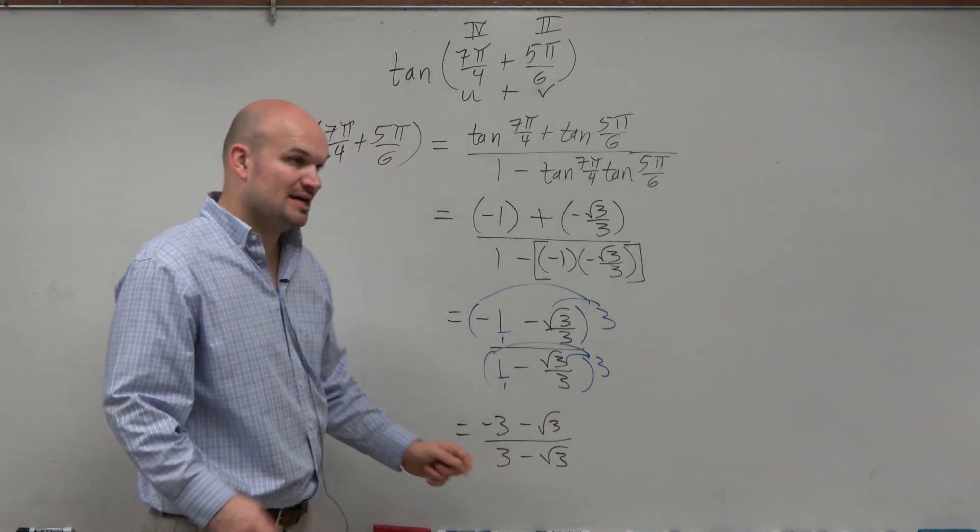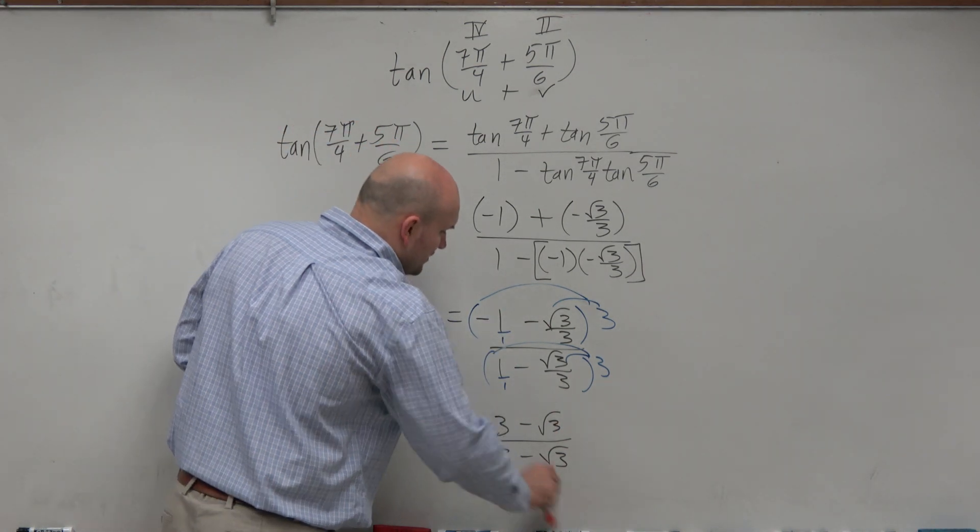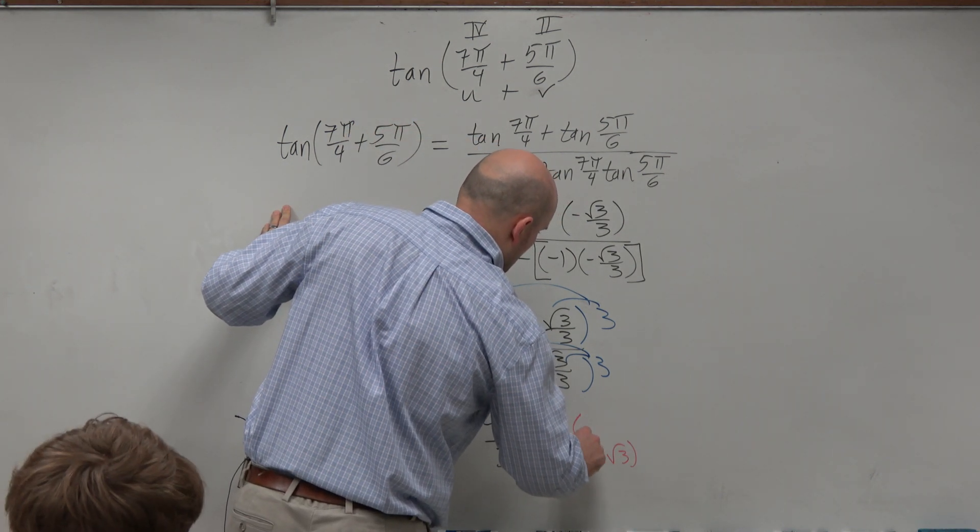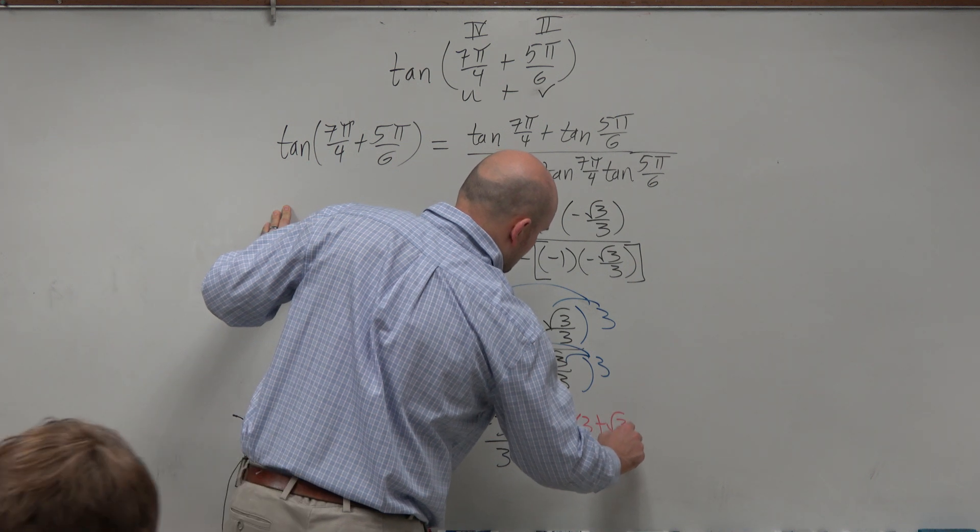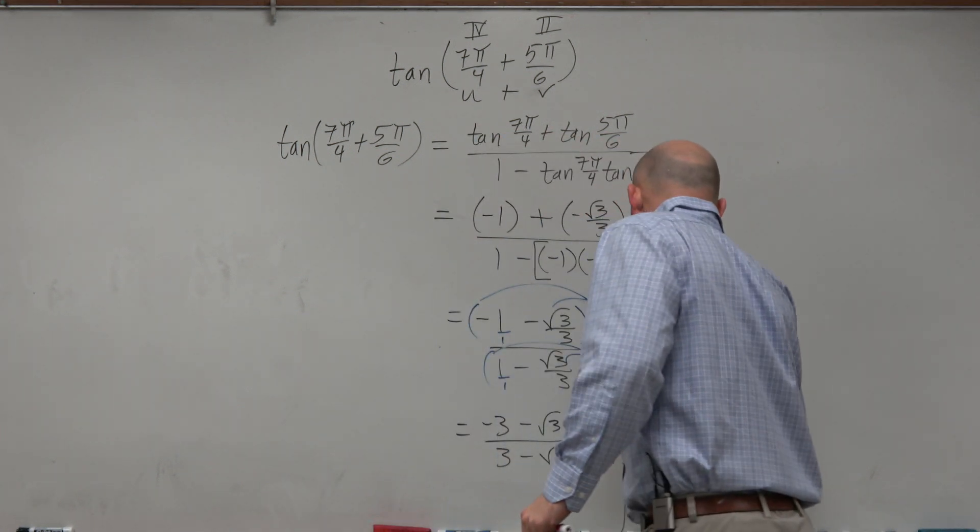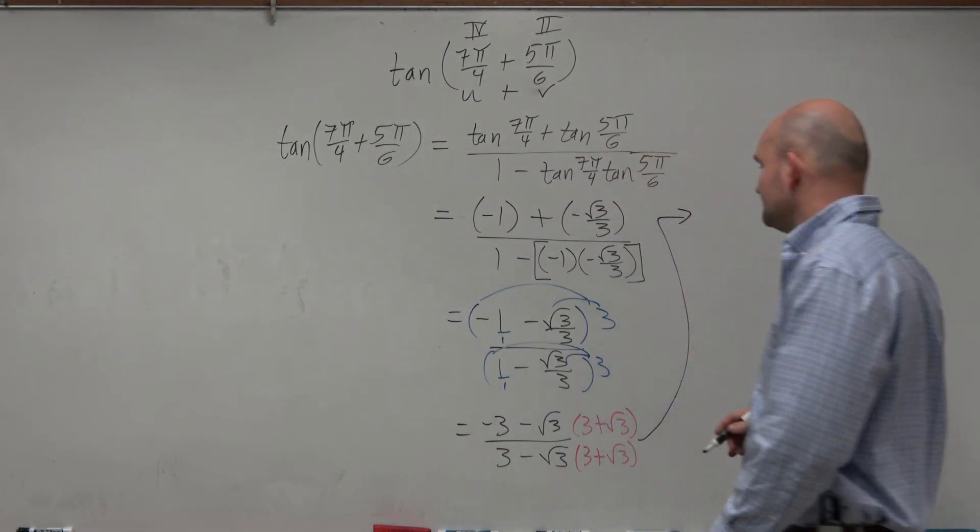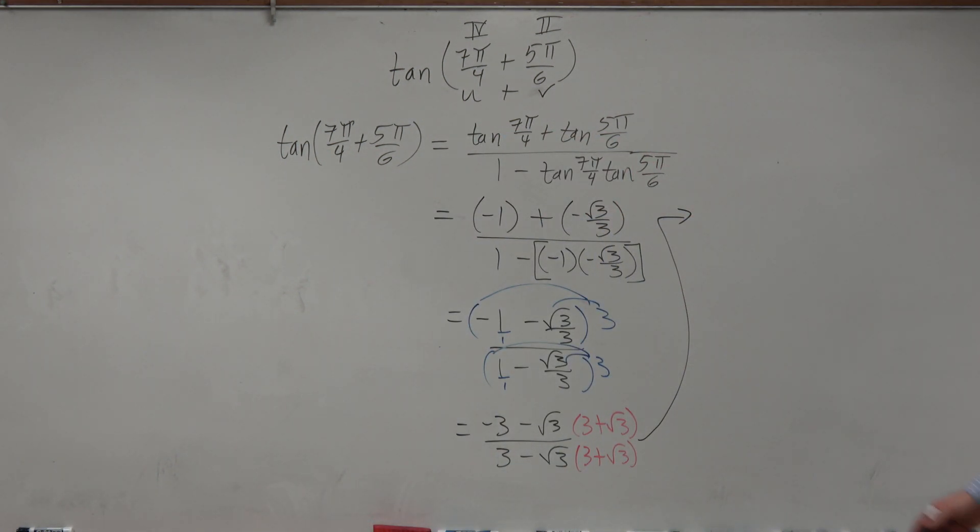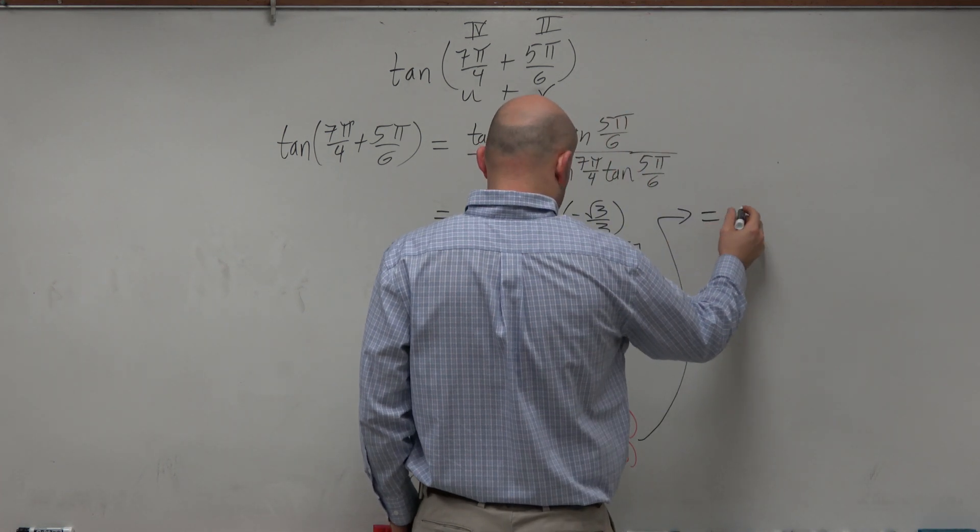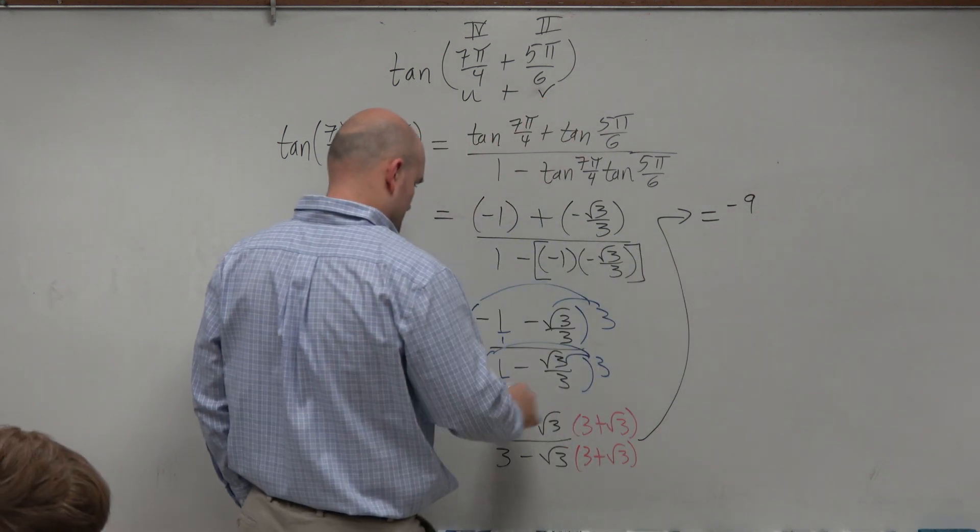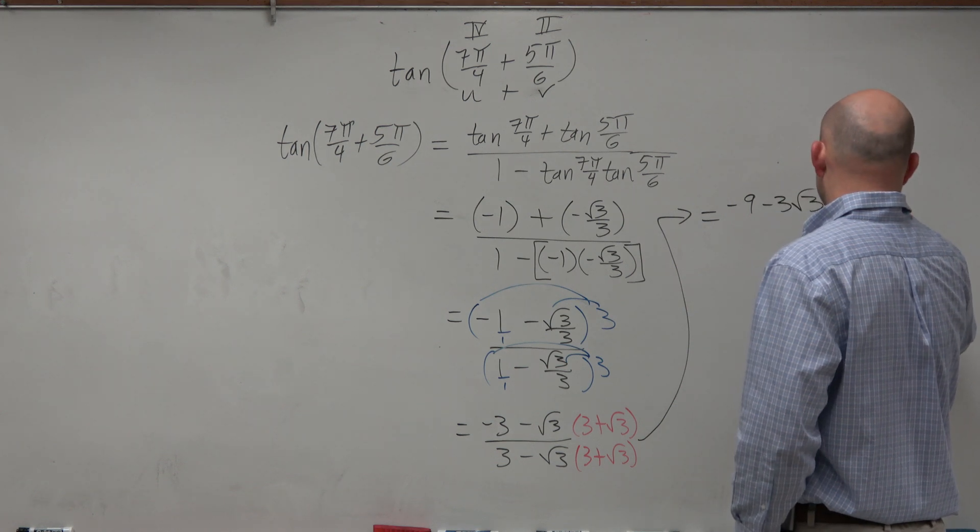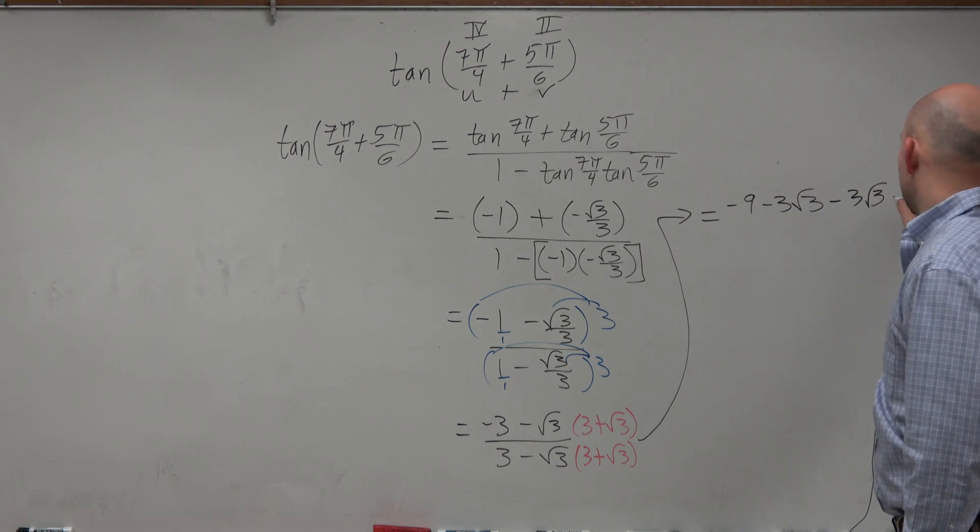Now, technically, we'd want to simplify this by rationalizing the denominator. When you do multiply this, I would recommend doing this individually for the numerator. So this is going to be negative 9 minus 3 square root of 3 minus 3 square root of 3 minus 3.